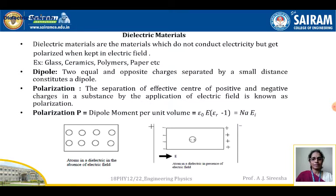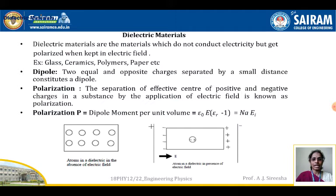As shown in the diagram, the centers of positive and negative charges in a substance get separated by the application of an electric field — this phenomenon is called polarization. Polarization P is nothing but dipole moment per unit volume, that is: P = ε₀ · E · (εᵣ − 1) = nα · E.